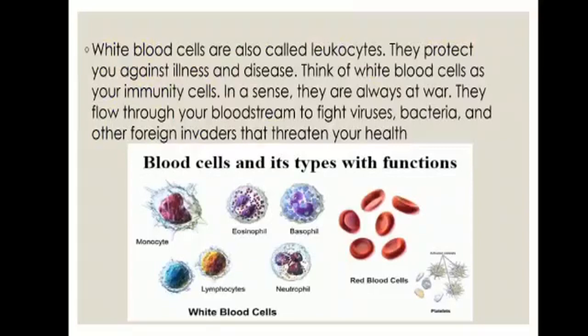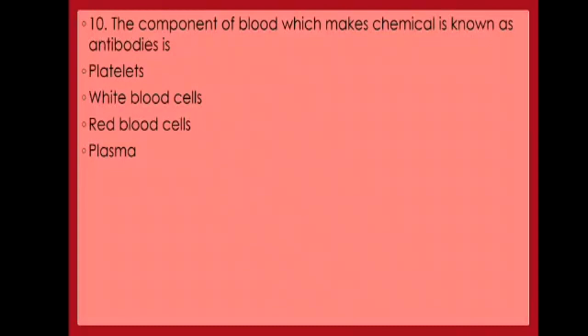White blood cells are also called leukocytes. They protect you against illness and disease — think of white blood cells as your immunity cells. They flow through your bloodstream to fight viruses, bacteria, and other foreign invaders that threaten your health. The different blood cells include monocytes, eosinophils, basophils, lymphocytes, neutrophils, RBCs, and platelets. Tenth question: The component of blood which makes chemicals known as antibodies is — platelets, white blood cells, red blood cells, or plasma? It is the white blood cells which make the antibodies.